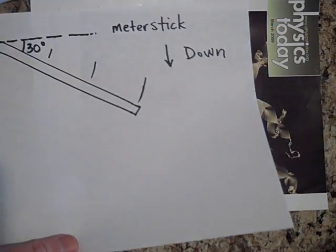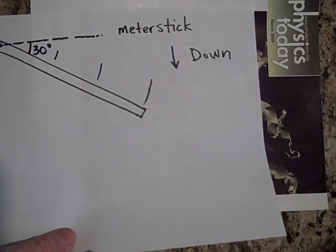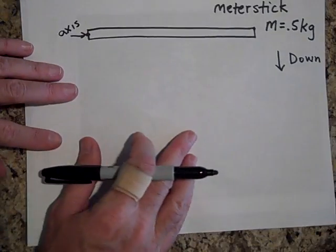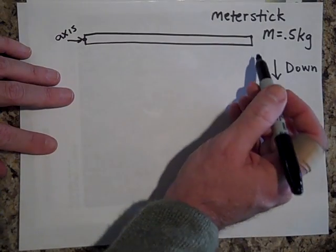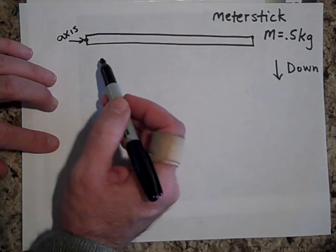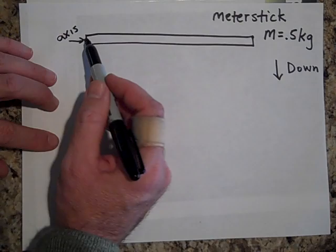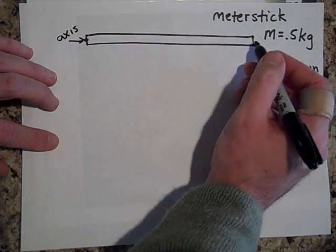Let's just talk real quickly about a meter stick that is being held up. This way is down. It's a half kilogram meter stick. This is the axis. And when you let go, you're holding it here.